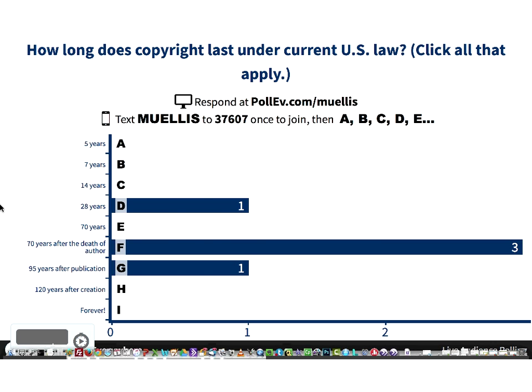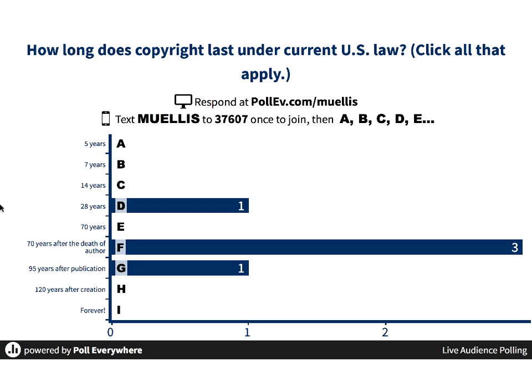When copyright law started in the United States, initially the term was only 14 years. The idea was that would give the creative person time to get return on their investment, and then other people would be able to build on their work. If it was still commercially viable, the copyright holder could renew for another 14 years, so it could be 28 years. But this has gotten longer and longer over time, particularly as we've come into coordination with other countries. Now the general rule is that things are covered by copyright for 70 years after the death of the author. In some cases even longer — if there is no identifiable author, it might be covered for 95 years after publication, or if it's in manuscript form, even longer.